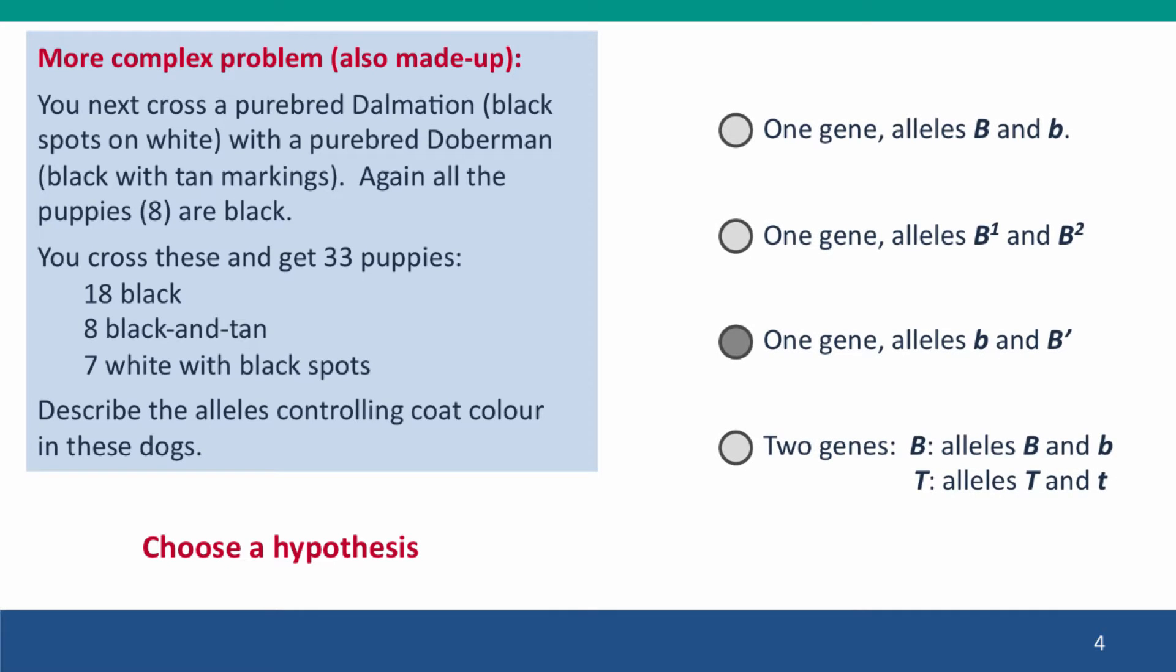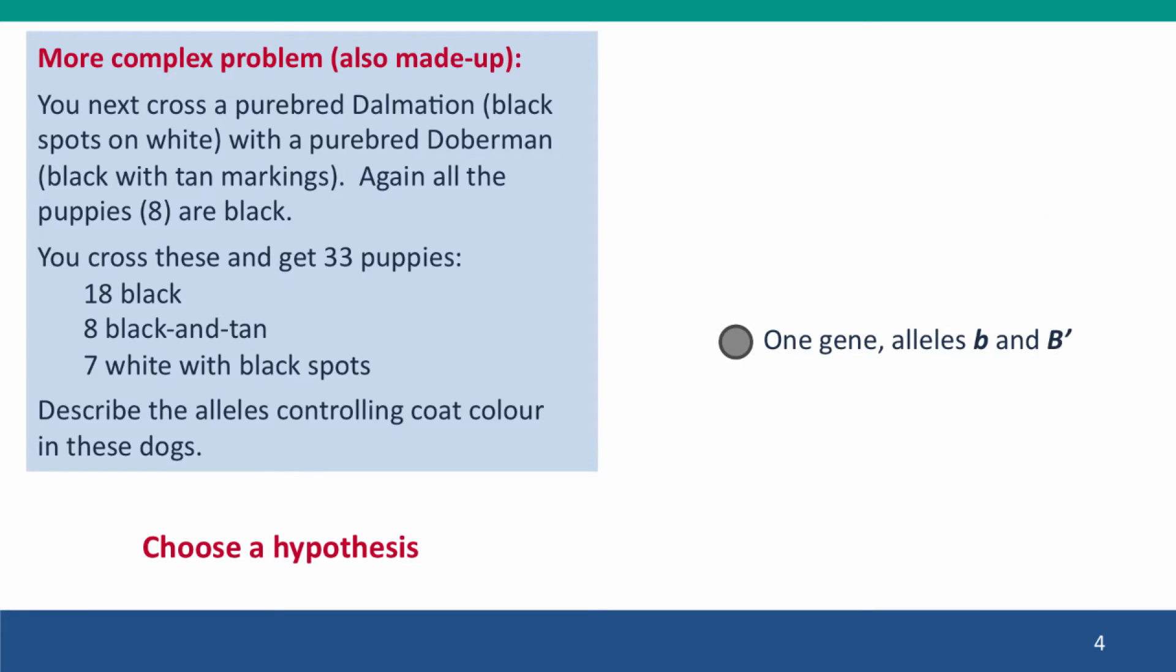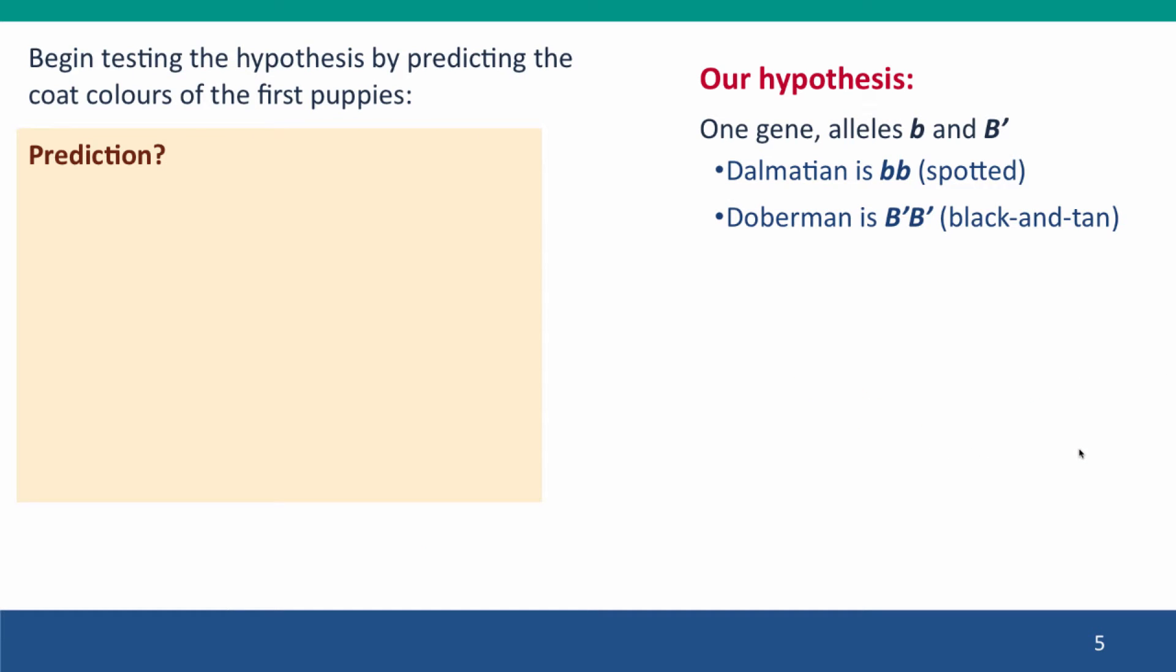In the interest of keeping the same allele nomenclature that we used for the previous problem, where we had big B and little b, I've suggested that we pick a hypothesis where we introduce a third allele and we'll call it B'. Under this hypothesis, in this problem, we're only considering two of the alleles, little b and B'. The Doberman would have the genotype B'B', causing the black and tan phenotype, and the Dalmatian has the little b, little b genotype, which makes them spotted.